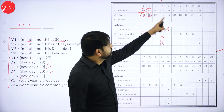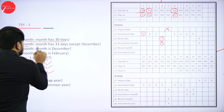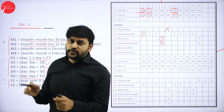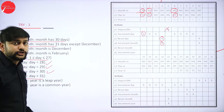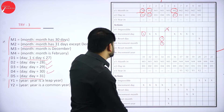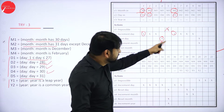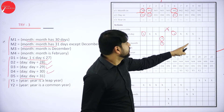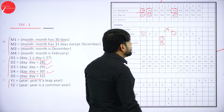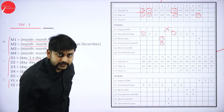For M2 (months with 31 days) and D1 (1 to 27): increment the day. For M2 and D2 (day 28): increment the day. For M2 and D3 (day 29): increment the day. For M2 and D4 (day 30): increment the day. For M2 and D5 (day 31): reset the day to 1 and increment the month, since we are at the end of the month.